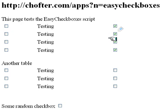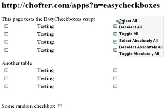If you see here, as you hover over a checkbox, a little icon is placed above and to the right of it. Simply hovering over that icon gives you a list of six actions you can take.